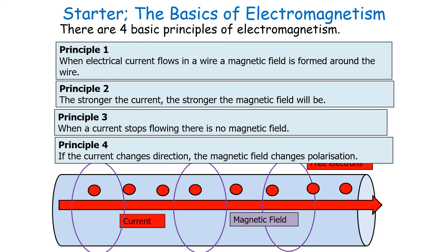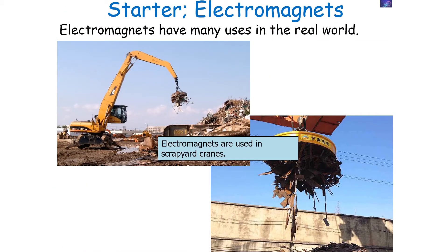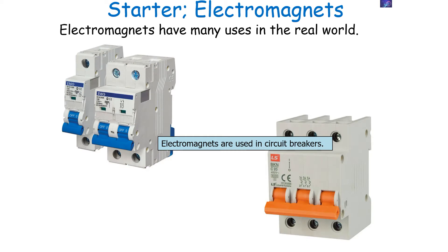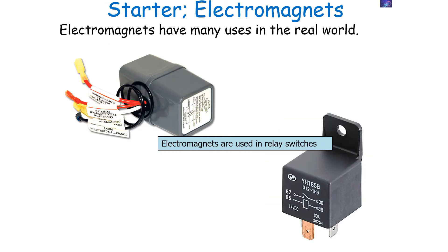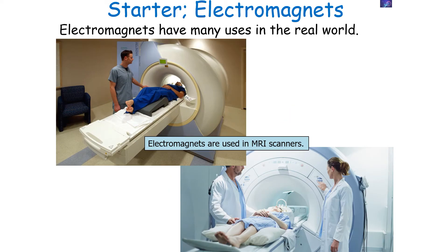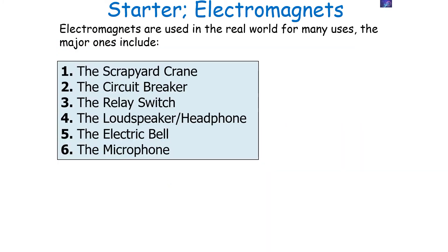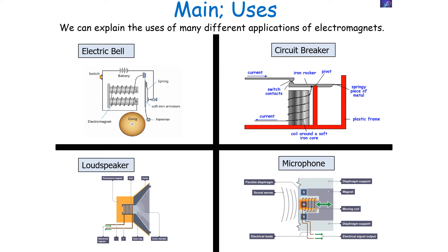With these four basic principles, we can explain how electromagnets can be used in the real world. Electromagnets have many uses, such as in scrapyard cranes, circuit breakers, relay switches, loudspeakers and headphones, electrical bells, particle accelerators, MRI scanners, microphones, and magnetic levitation trains. We can explain these applications by considering those four basic principles of electromagnetism.